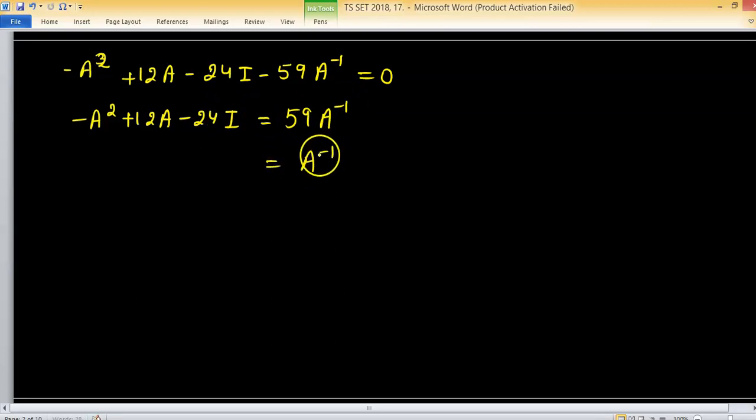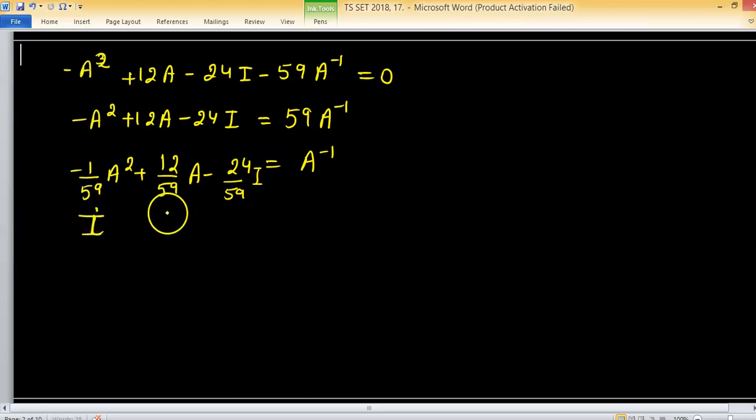And it is given A inverse can be written as minus 1 upon 59 A square plus 12 upon 59 A minus 24 upon 59 I. So this is the value of i, this is m, and this is n. And we have to add all these.